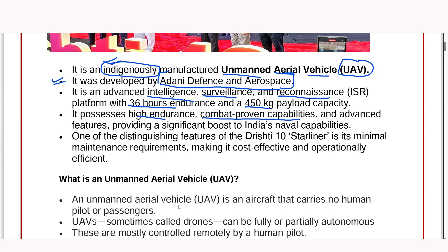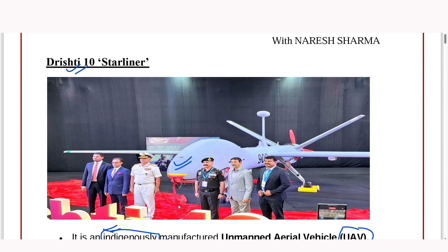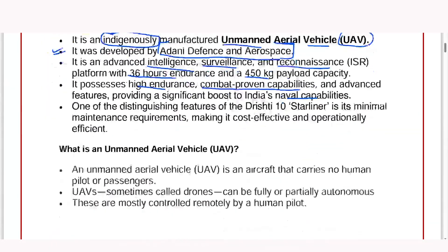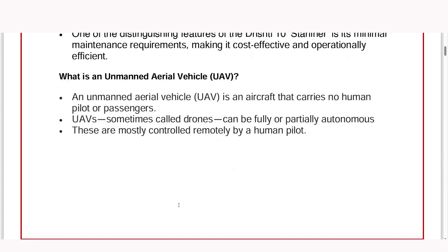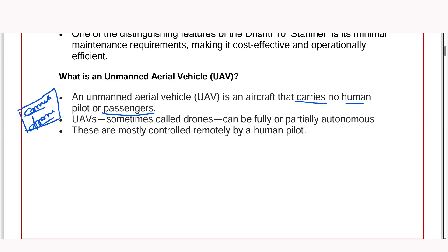What is the Drishti Pan Star liner? It is an unmanned aerial vehicle — just like a drone. An unmanned aerial vehicle is an aircraft that carries no human pilot or passengers. We use drones, for example, at marriage parties to record video. It is operated remotely. Some kinds are called drones.